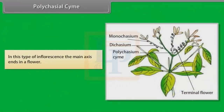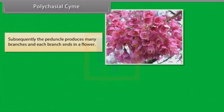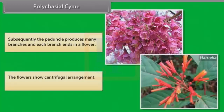In Polycasial chyme, the main axis ends in a flower; subsequently the peduncle produces many branches and each branch ends in a flower. The flowers show centrifugal arrangement. Example: Hamelia.